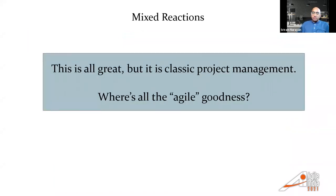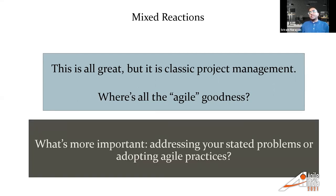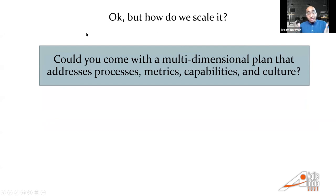The reaction was: this is all good, but this is classic project management — where's all the agile stuff you're famous for? I was a little puzzled. I said: you've outlined your measures of success, you've said there are problems with overruns and voluntary tool adoption, and I'm suggesting the first set of steps to address those problems. So what's more important — addressing the problems you've shared with me, or adopting agile practices? Some of them understood that. But others were looking for me to come up with a nice multi-dimensional plan addressing processes, metrics, capabilities, culture, and so on.